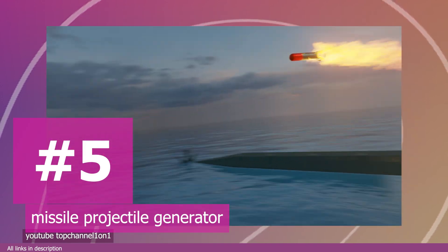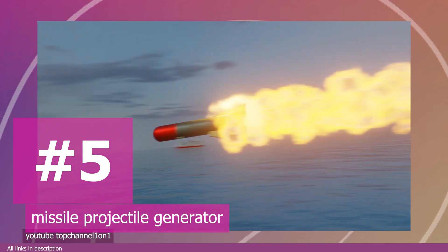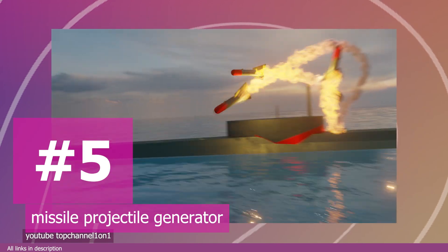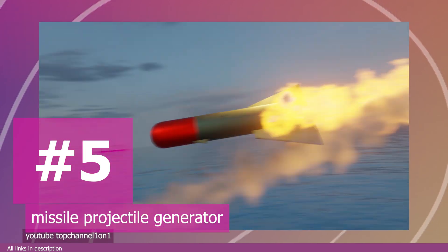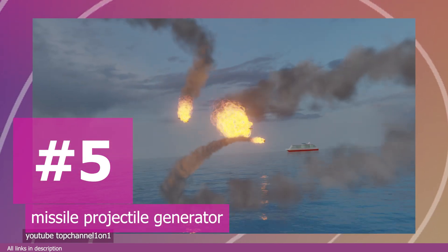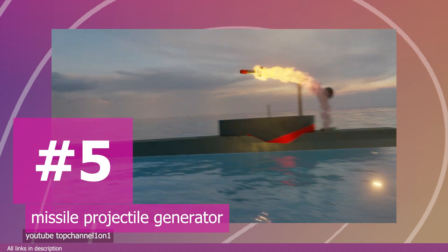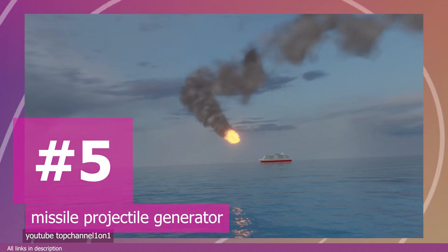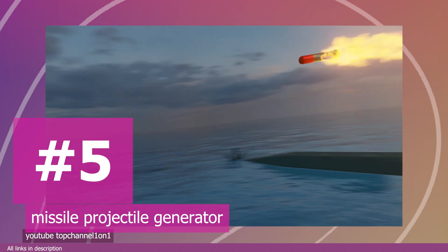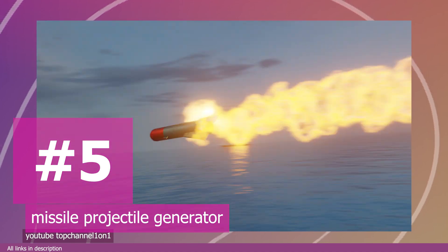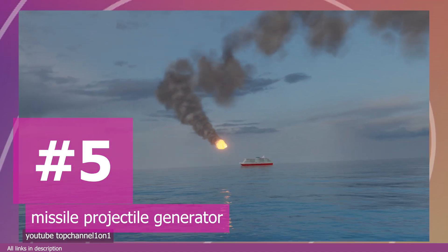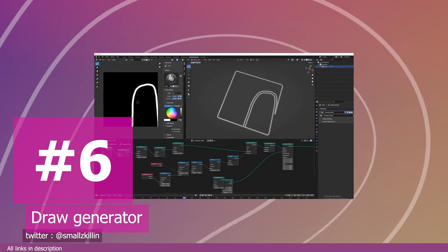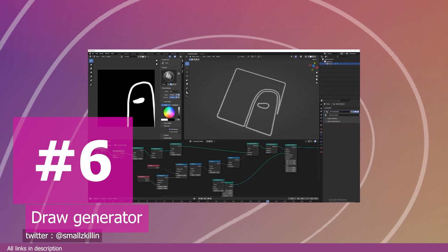Number five: the missile projectile generator — my own creation. I wanted to make missile projectiles with smoke trails, but I didn't want to do a smoke simulation because a domain large enough to contain the whole projectile would be too expensive to simulate and render. So I ended up making fake smoke trails using geometry nodes. You can check out the full step-by-step tutorial and the project file in the links below.